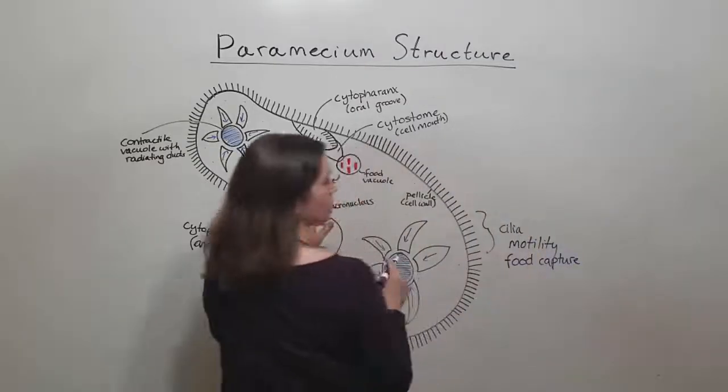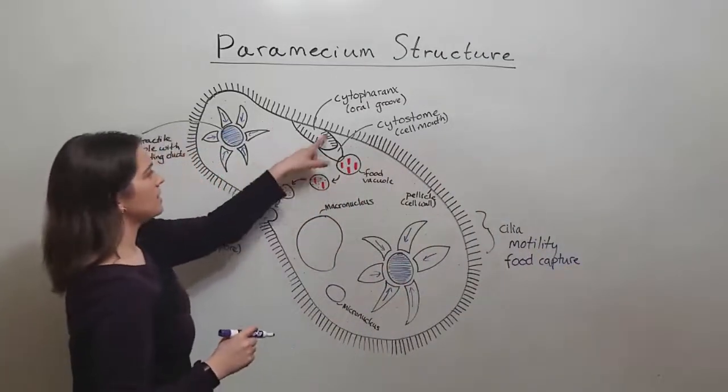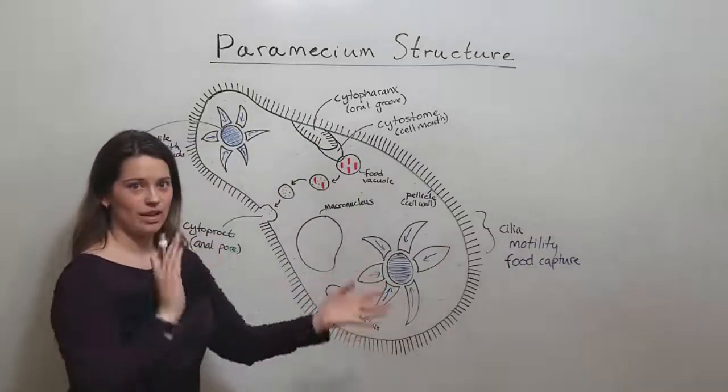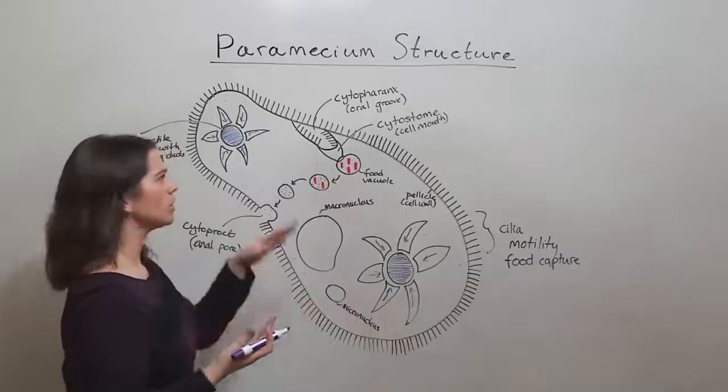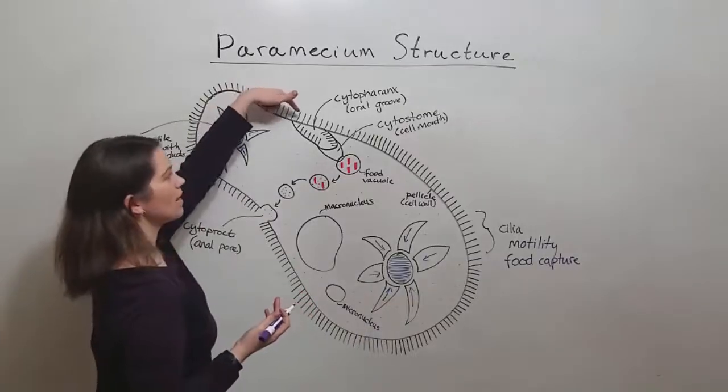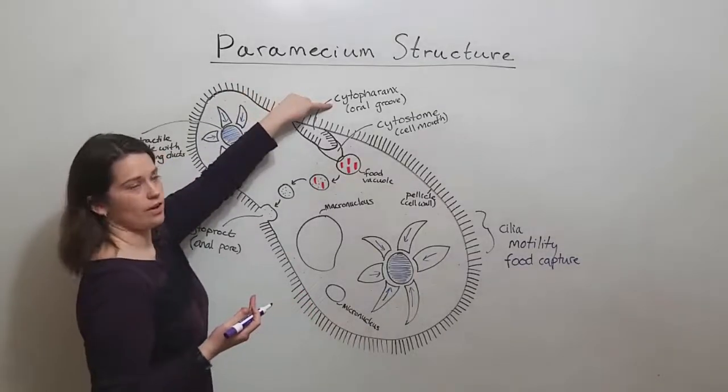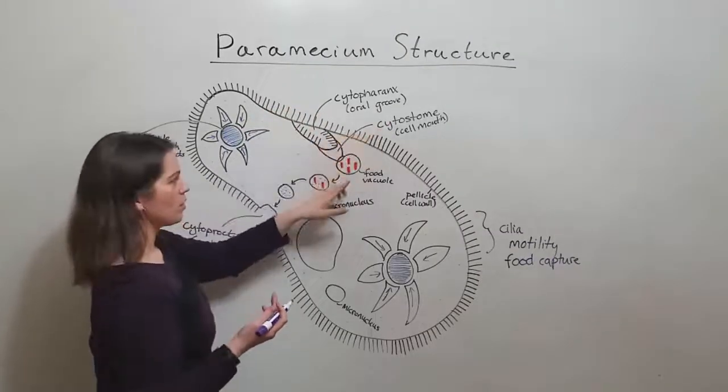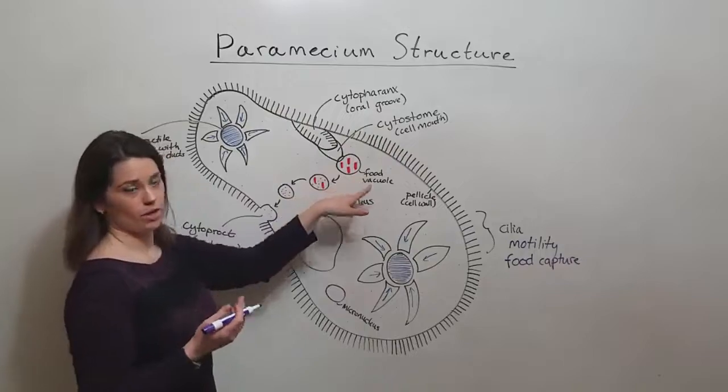The way they function in food capture is right here. The cilia in this region will actually beat in such a way that it creates like a little whirlpool, which is really cool, and it will help direct food into the cytopharynx, which is also known as the oral groove, and then down into the cytosome or the cell mouth, where it will collect into a food vacuole.